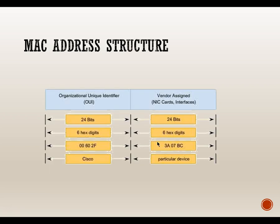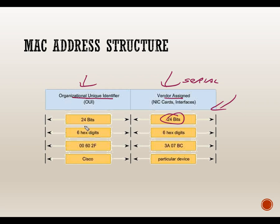The differences between 802.3 Ethernet frame types are minor — one has a start-of-frame delimiter, minor differences in the preamble. The MAC address structure has two parts: the OUI (Organizationally Unique Identifier), which is the first 24 bits identifying the manufacturer, and the vendor-assigned portion, which is the second 24 bits acting as a unique serial number. For example, Cisco OUI starts with 00:60:2F — any MAC beginning with that sequence was manufactured by Cisco.